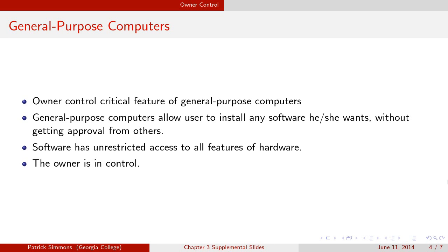Now I'd like to talk about owner control. One critical feature of general-purpose computers — desktops and laptops — is that the owner has control over what software runs on it. You can install anything you want on your desktop or laptop without getting approval from anybody. For instance, you don't have to get Apple's approval before installing software on your MacBook. You can install Windows on your MacBook, you can install Linux — you can do whatever you want, and nobody is going to try to stop you.